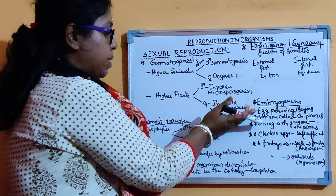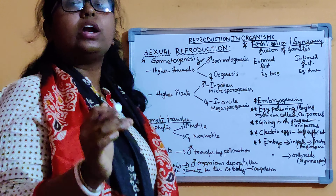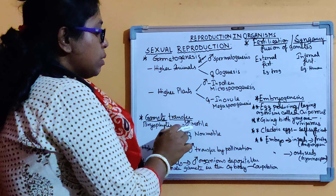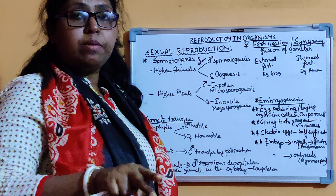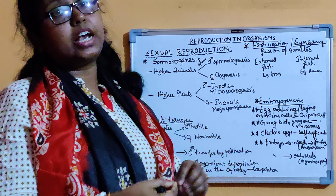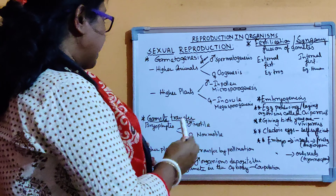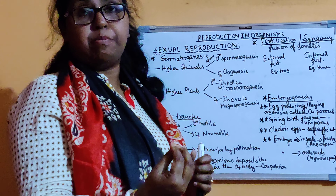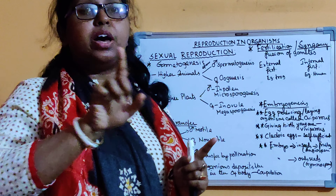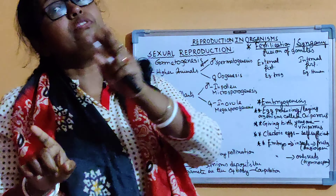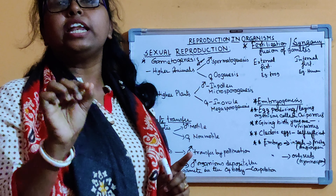After the production of gametes, how are the gametes transferred? In the lower group of plants like the bryophytes, the male gametes are always motile — they swim and come in contact with the female gametes and fuse to produce the zygote. In case of higher plants, the male gametes are transferred from the male reproductive organ to the female reproductive organ. This process is called pollination.